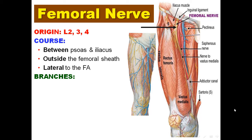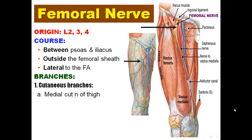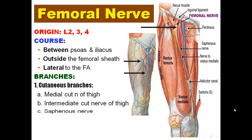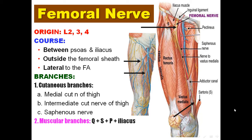Regarding the cutaneous branches, the femoral nerve gives three cutaneous branches: the medial cutaneous nerve of the thigh, the intermediate cutaneous nerve of the thigh, and the longest one — the saphenous nerve. Regarding muscular branches, it supplies the quadriceps, sartorius, iliacus, and pectineus. The quadriceps includes the rectus femoris, vastus medialis, vastus lateralis, and vastus intermedius.